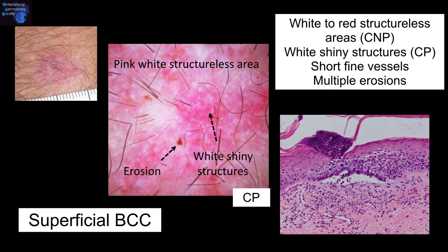Another example, in this instance with contact polarization. In the contact polarized mode, we see pink-white structural areas, erosion, and white shiny structures.